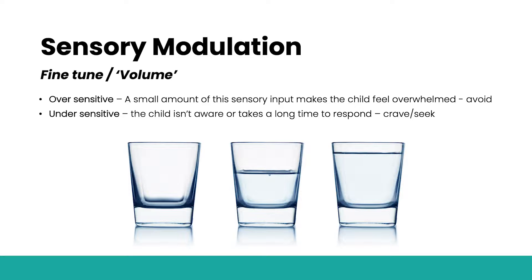When the millions of pieces of sensory information reach our brain, they are processed and sifted through — almost like there is a secretary in the brain deciding which information is important and which messages can be ignored. If we don't get the right messages, or get too many messages, it impacts on how we function. We call this process of regulating and processing sensory information sensory modulation. The fine-tuning allows us to turn up the volume for some information but ignore others.